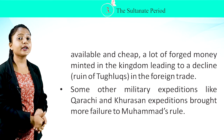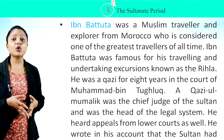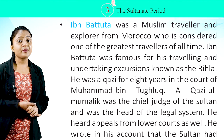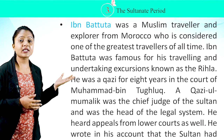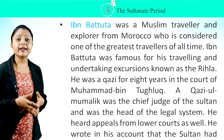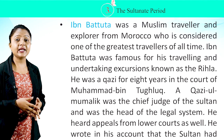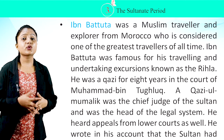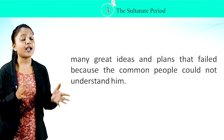Ibn Battuta was a Muslim traveler and explorer from Morocco, considered one of the greatest travelers of all time. He was famous for his travels and journeys known as the Rihla. He served as Qazi for eight years in the court of Muhammad bin Tughlaq. The Qazi-ul-Qudat was the chief judge of the Sultan and head of the legal system, hearing appeals from lower courts as well. Ibn Battuta wrote in his account that the Sultan had many great ideas and plans that failed because the common people could not understand him.